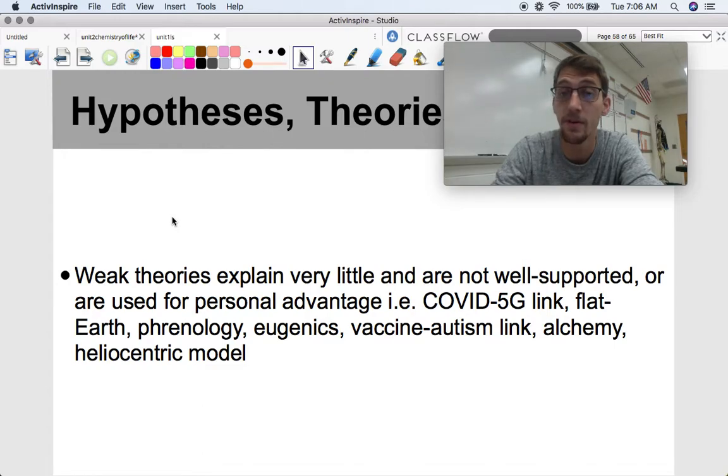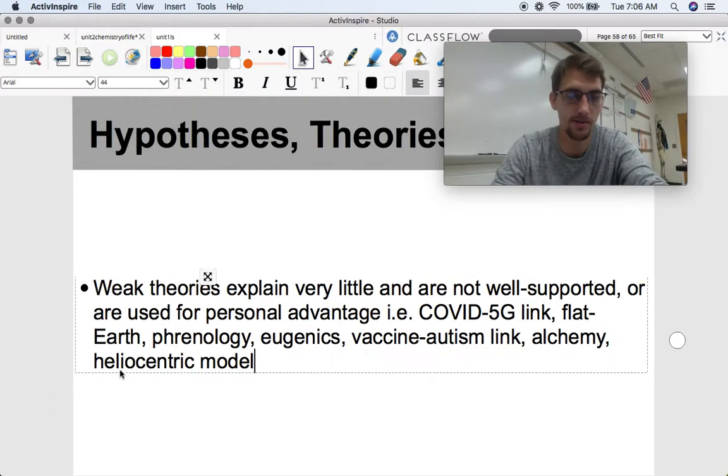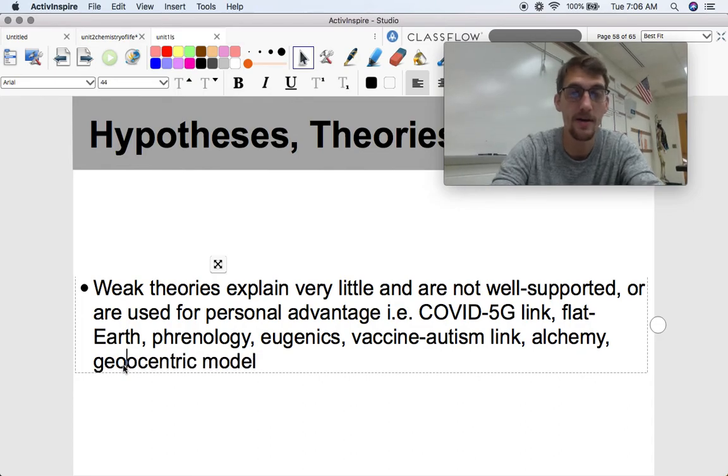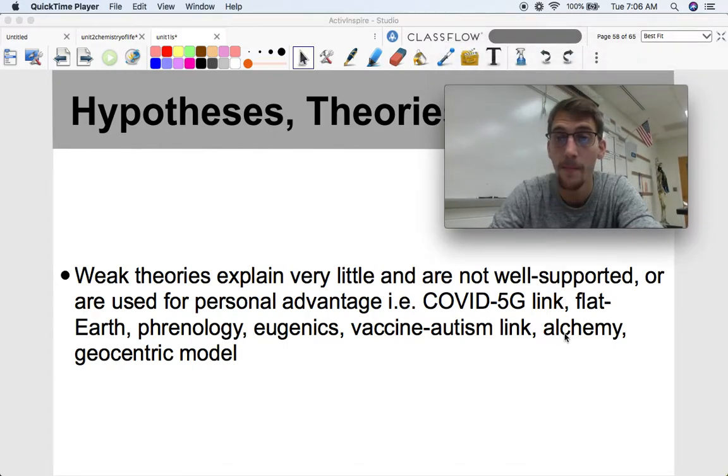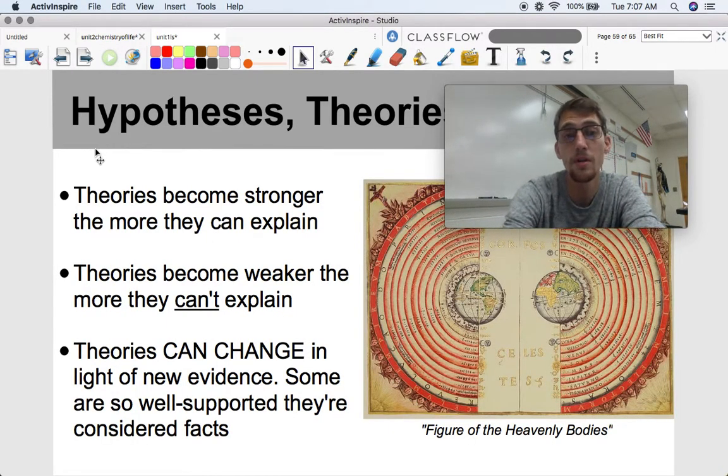Weak theories tend to explain very little and are not well-supported or are used for a personal advantage. The COVID-5G link is not well-supported. Flat Earth is not well-supported in evidence. Eugenics, which is promoted or pushed to promote a personal agenda, a link between vaccines and autism, alchemy, and the geocentric model, are all very weak theories that are not well-supported through scientific evidence and observation. They don't explain much at all. So that's what makes them a weak theory. There's not evidence to back them up, and they don't explain very much.